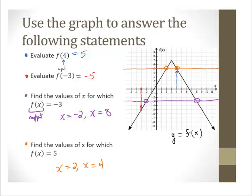Compare those two processes: evaluating f(4) means the input is given. Finding the values of x for which f(x) = −3 means the output is given. The process for answering those questions is a little bit different for each one.